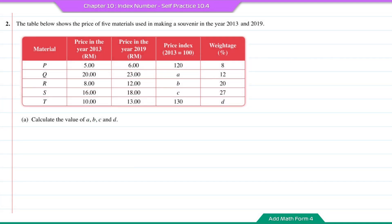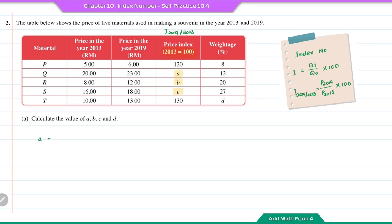Question number 2. The table shows the price of five materials used in making a souvenir in the year 2013 and 2019. Question A: calculate the values of A, B, C and D. A, B, C are price indices in 2019 based on 2013. A = 23 ÷ 20 × 100 = 115. B = 12 ÷ 8 × 100 = 150. C = 18 ÷ 16 × 100 = 112.5.